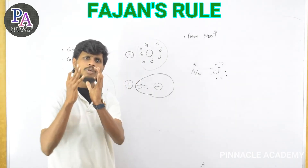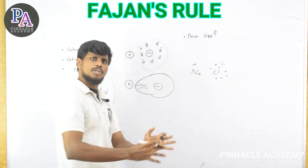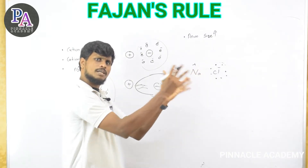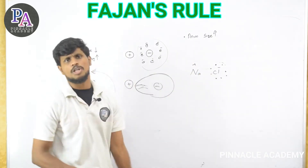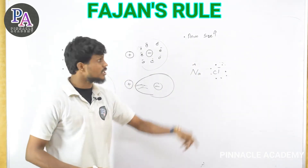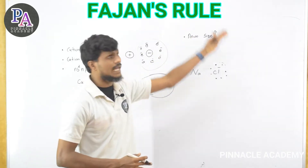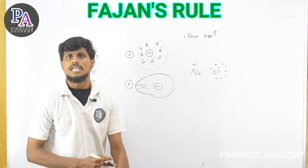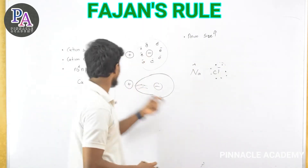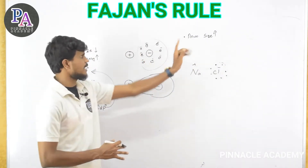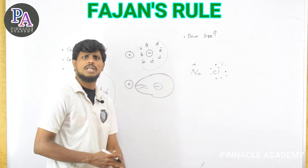When the electron cloud shifts and the energy transfers, the covalent character increases. So a smaller cation size means a stronger nuclear pull on the anion's electron cloud, which increases polarization and therefore increases covalent character. This is a key step in understanding Fajans Rule.